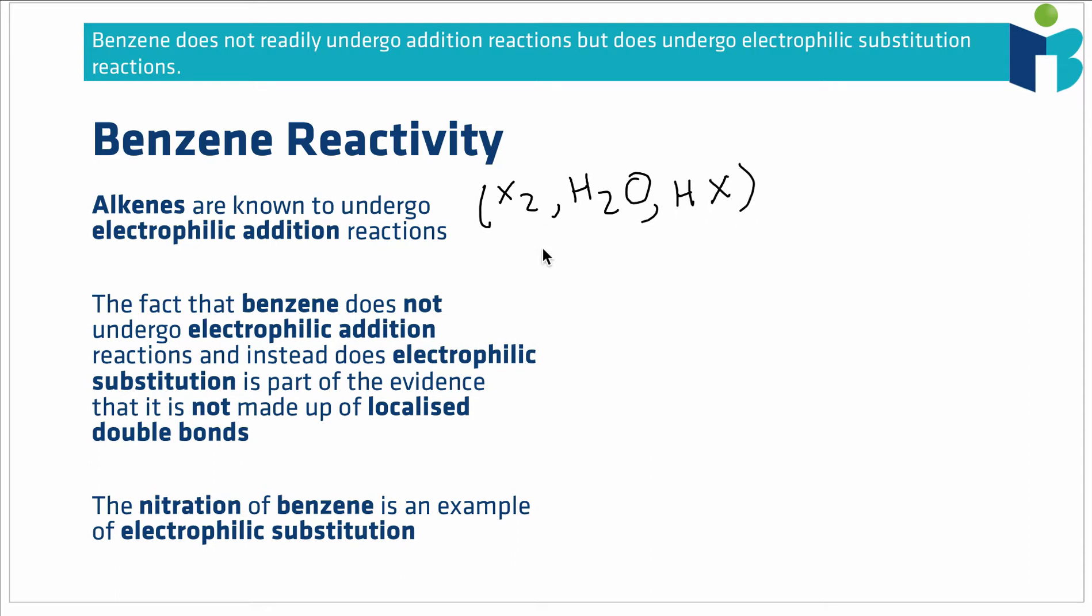However, what we find is that if we put benzene in the presence of any of these species, for example a halogen, nothing happens. We get no reactions.